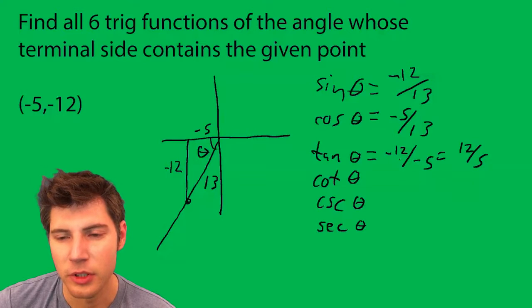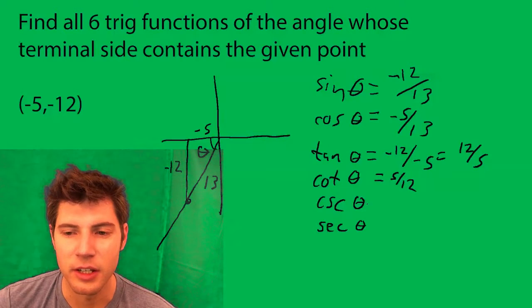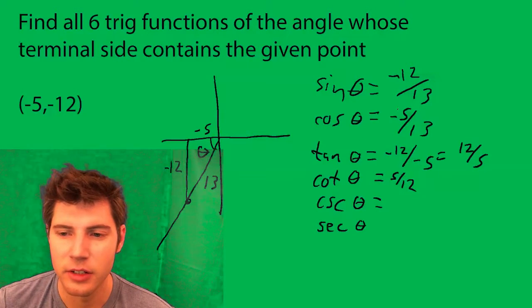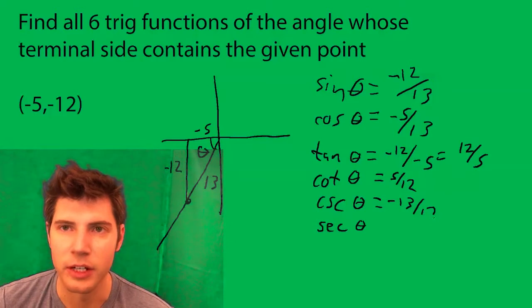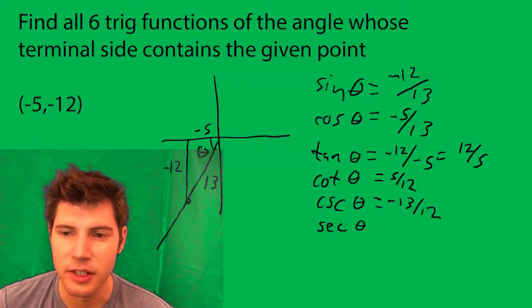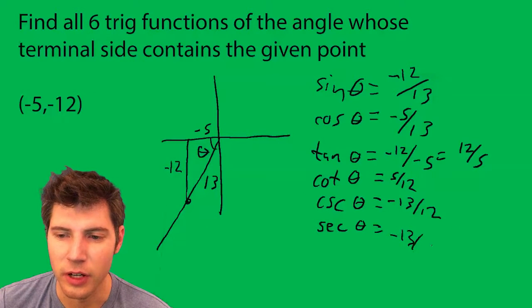Cotangent is the reciprocal of tangent, so it's 5/12. Cosecant is the reciprocal of sine, so it's -13/12. And secant is the reciprocal of cosine, so it's -13/5.